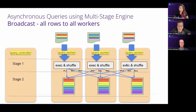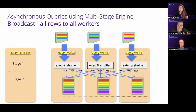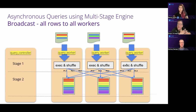Druid has two different query engines. The native engine works as just described. The multi-stage query engine (MSQ) also supports joins and works in multiple stages with the key ability to reshuffle data. It can receive data from Druid segment files or external files, then reorganize it — for example, reading segments locally in stage one and redistributing rows across workers in parallel. This differs from the native engine because all workers talk to each other, each reading their own rows and sending them to each other — effectively a broadcast in MSQ.